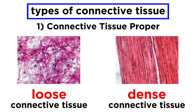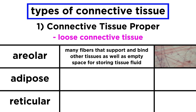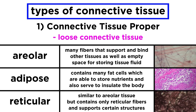Now that we have some general information down, let's look at each type of connective tissue more closely. First, connective tissue proper. This can be either loose connective tissue or dense connective tissue, each with three subcategories. Loose connective tissue can be areolar, adipose, or reticular. The areolar variety has lots of fibers that support and bind other tissues, with lots of empty space for storing tissue fluid — it is the most abundant connective tissue, wrapping around some structures and cushioning others. Adipose connective tissue consists of fat cells, which store nutrients and insulate the body. And reticular connective tissue is similar to areolar, but with only reticular fibers, supporting certain structures in the body.